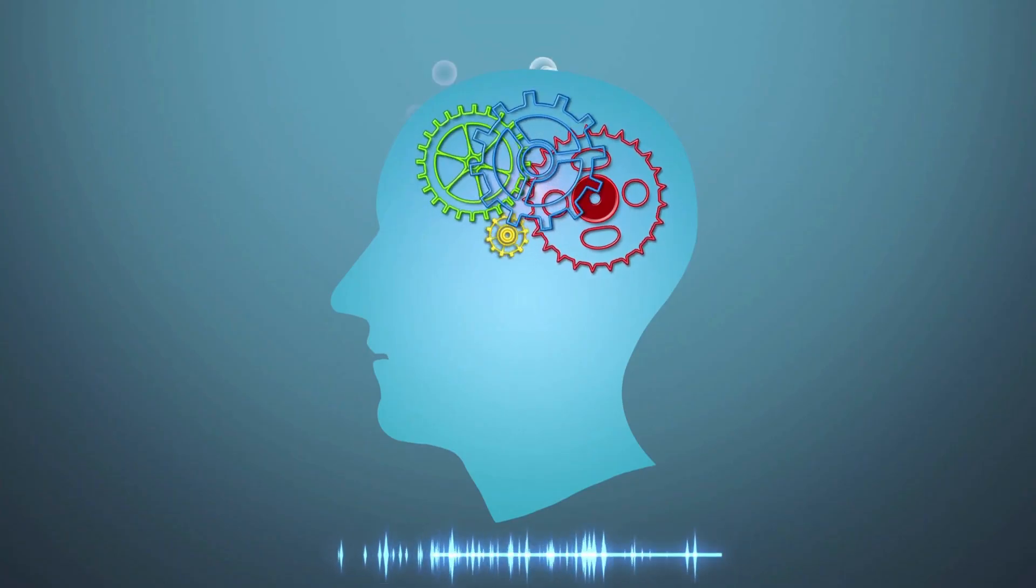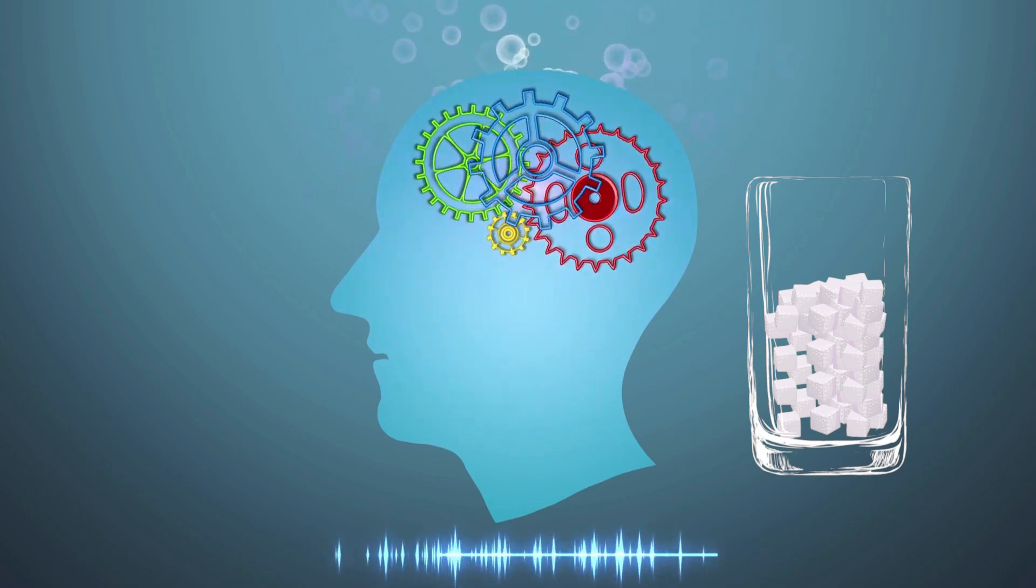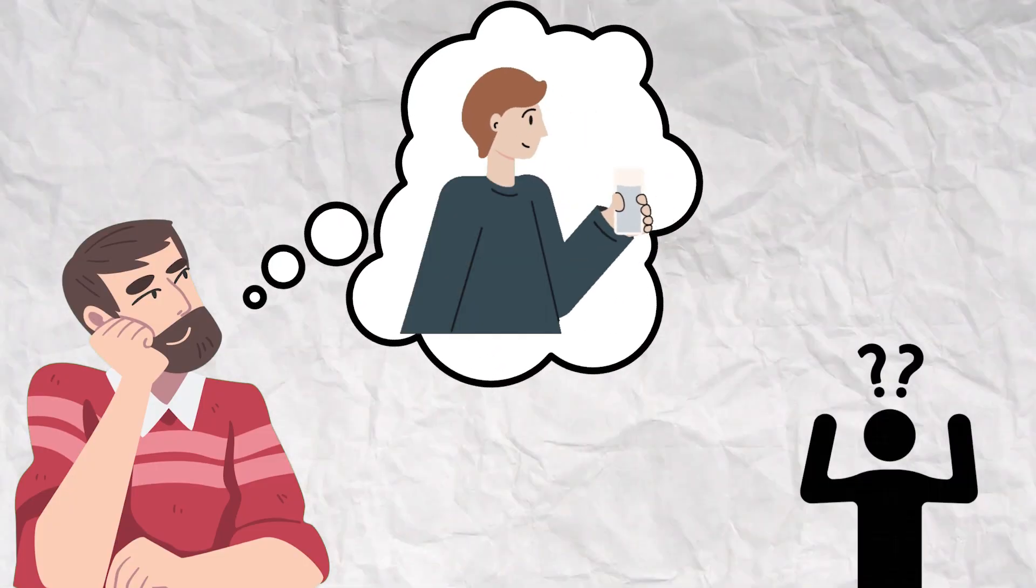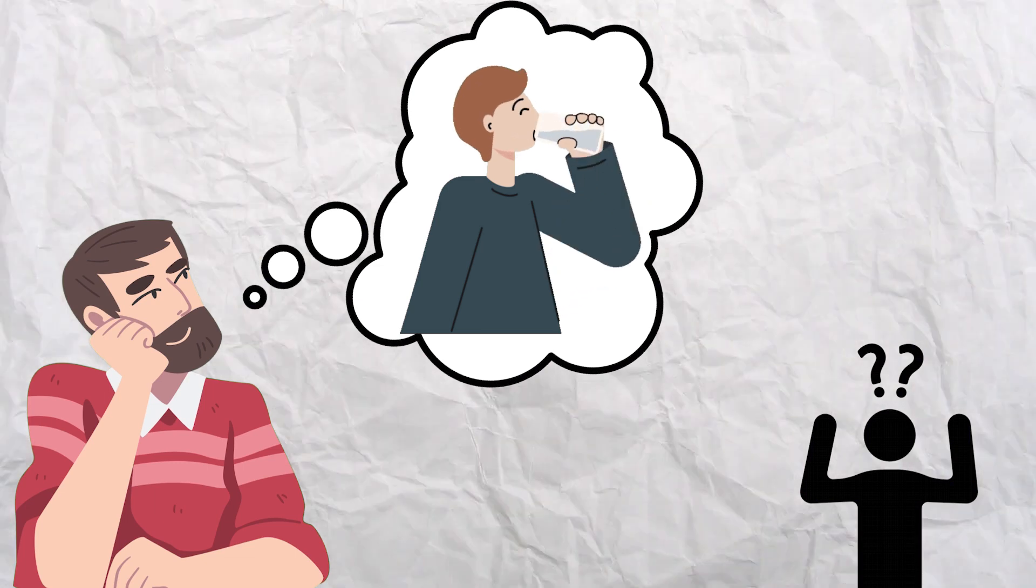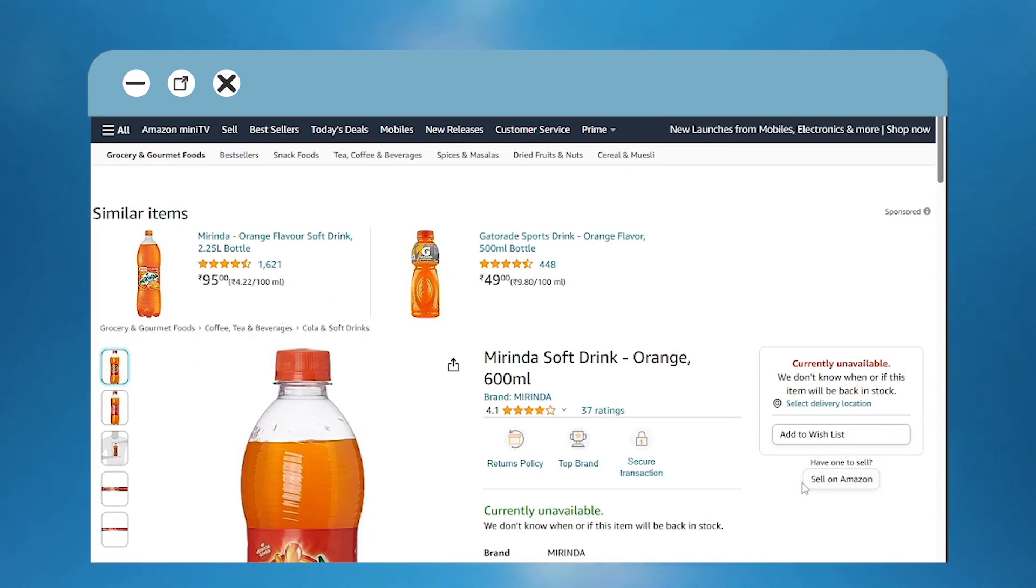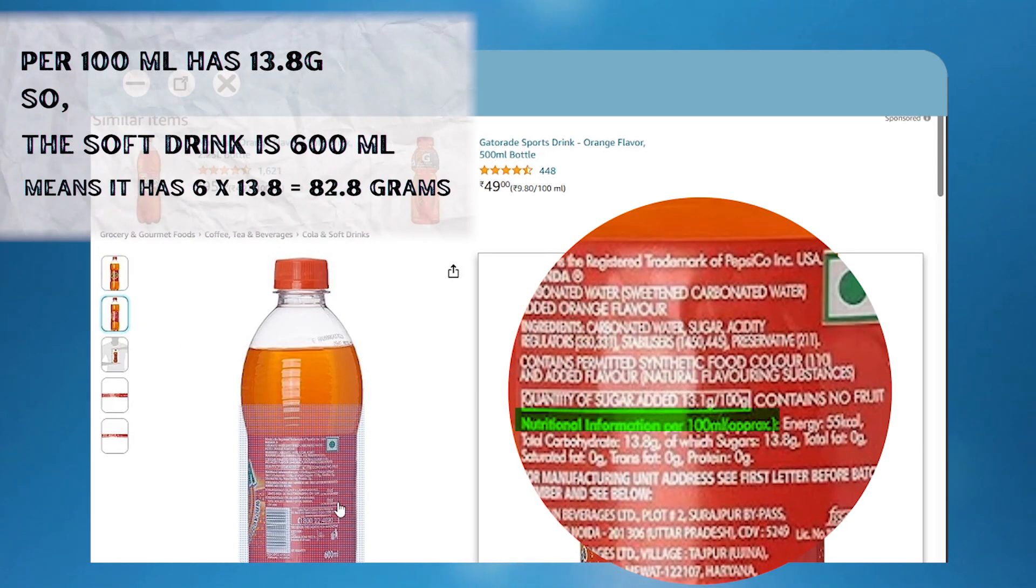Hey friends, think about this for a moment. Imagine having a glass that's halfway filled with sugar. Now, try to picture yourself eating all of that sugar in one go. It sounds pretty tough, doesn't it? But guess what? In a 600ml bottle of Mirinda, there's actually that much sugar inside, a whopping 82.8 grams to be precise.